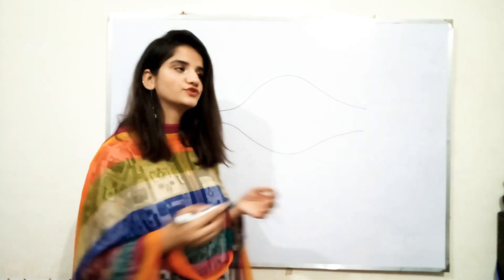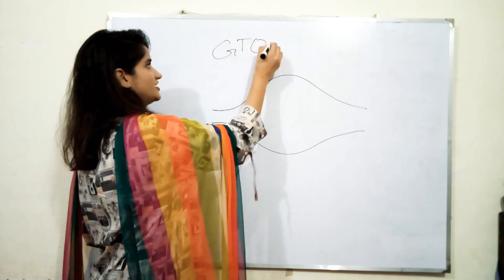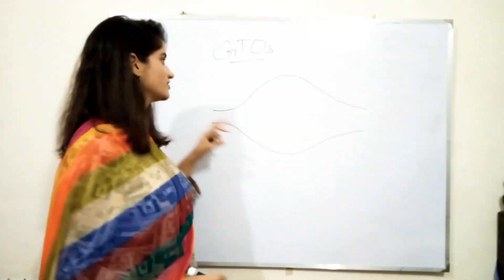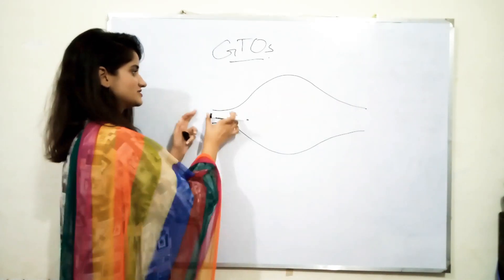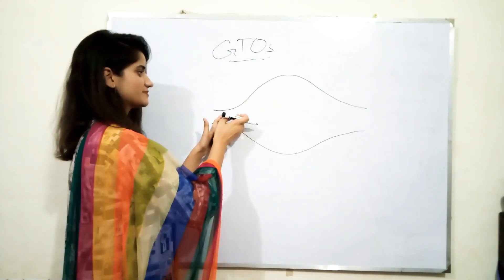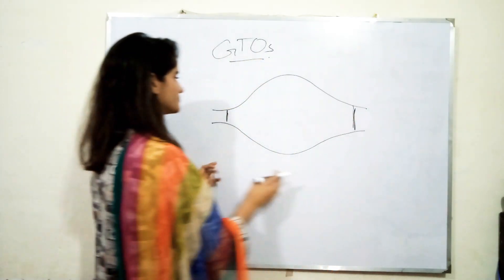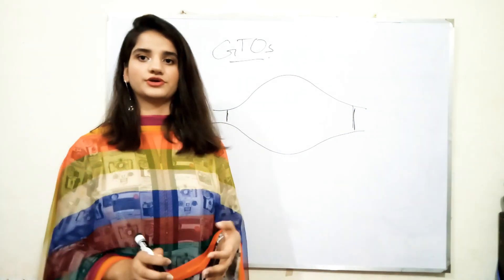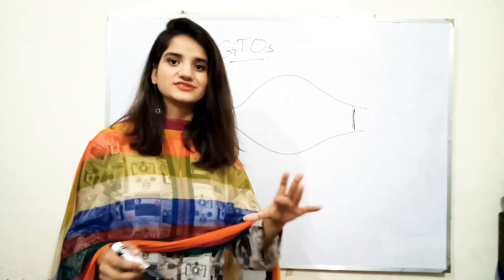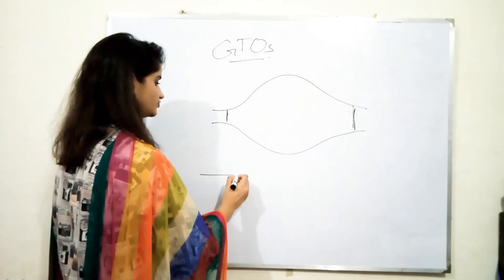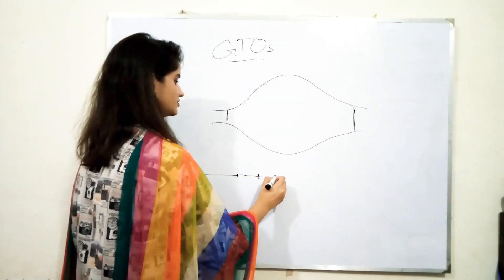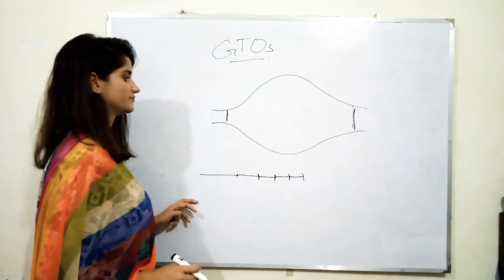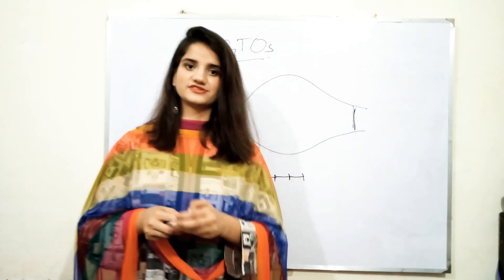First of all, we will get to know about GTO. What are GTOs? GTOs are Golgi Tendon Organs. These are the sensory receptors that are present in the muscle-tendon junction — both the origin and insertion of a muscle. They are arranged in a series pattern, where 10 to 15 fibers are attached and present in series with them.